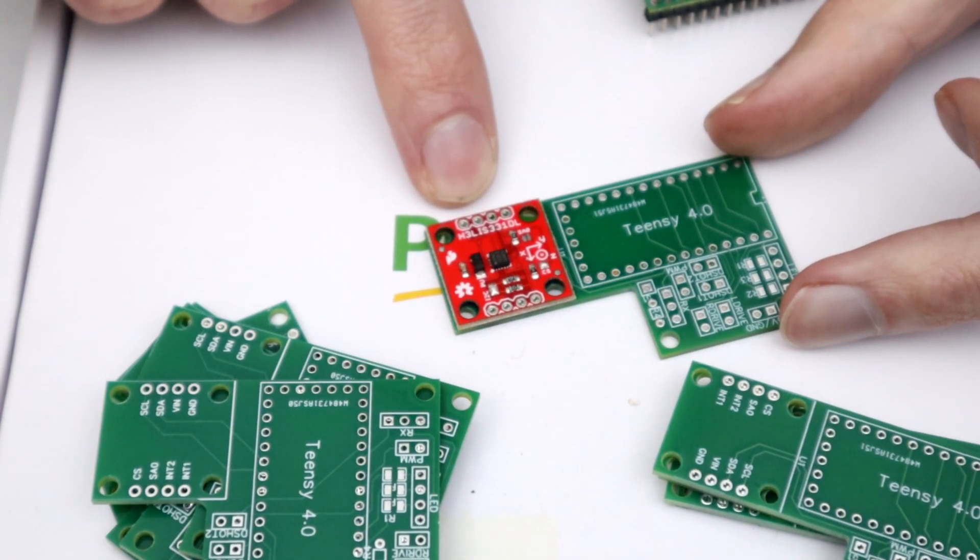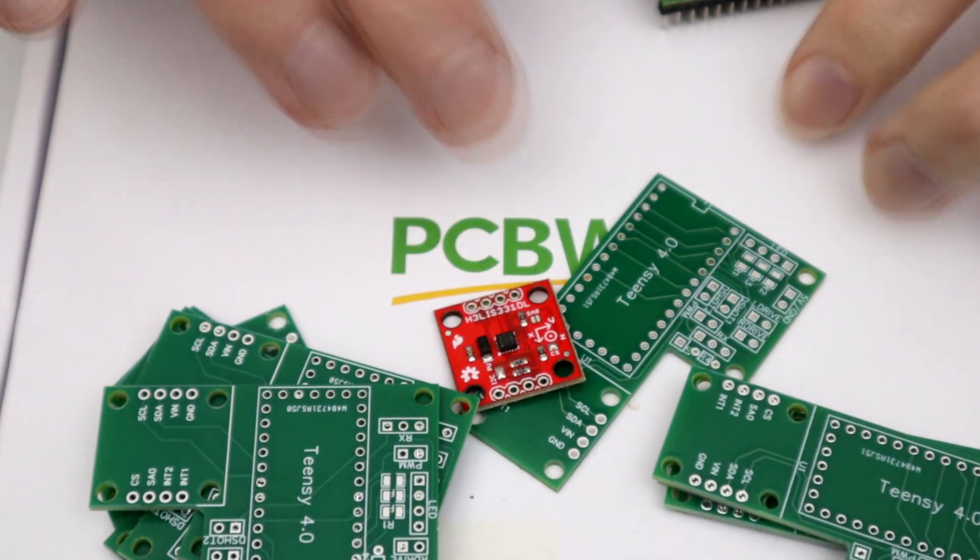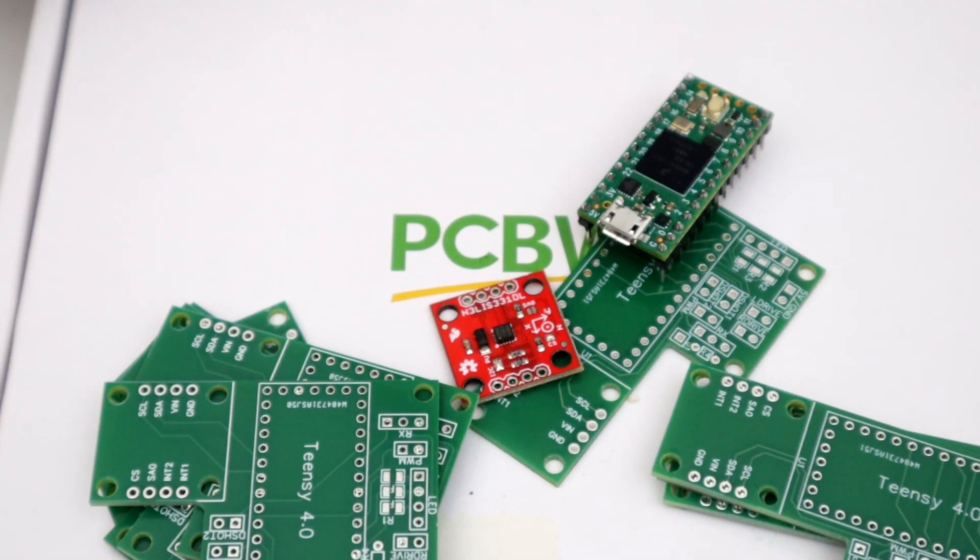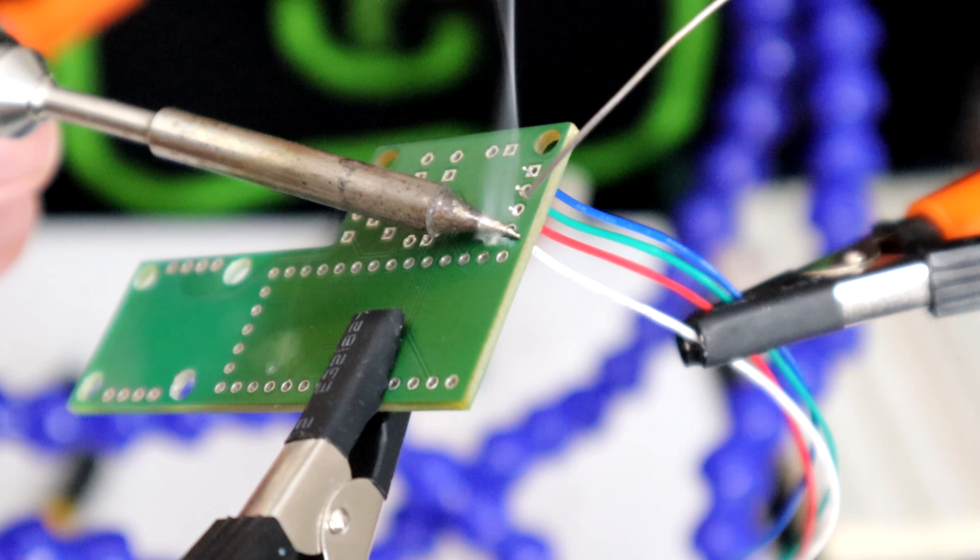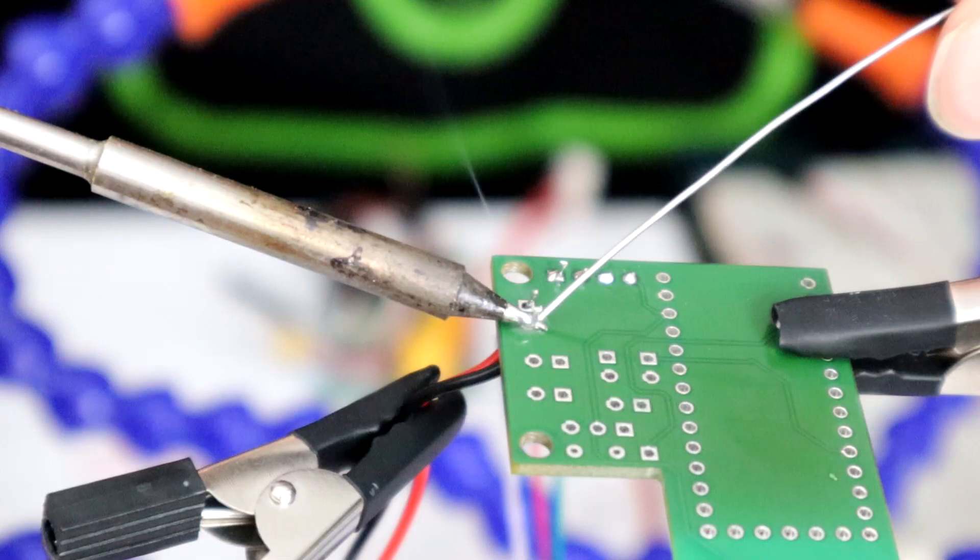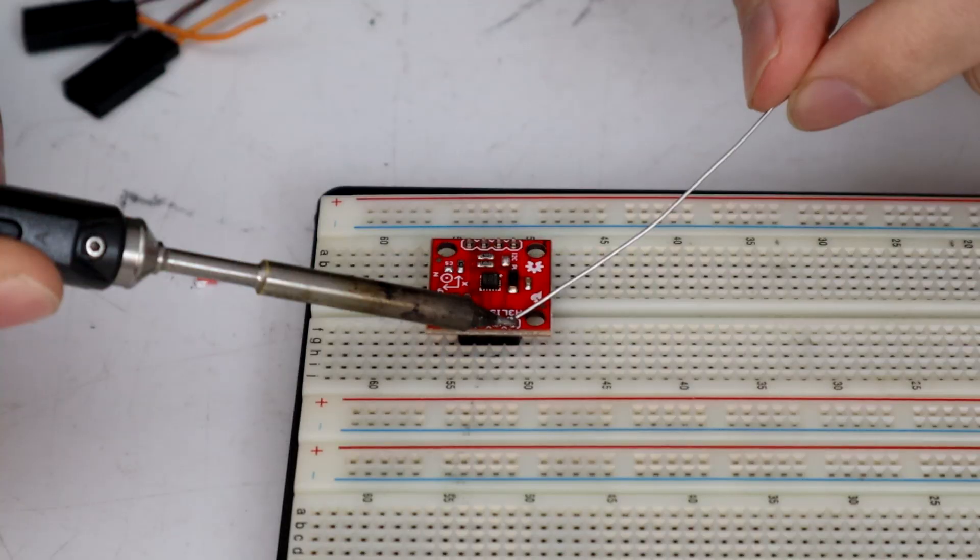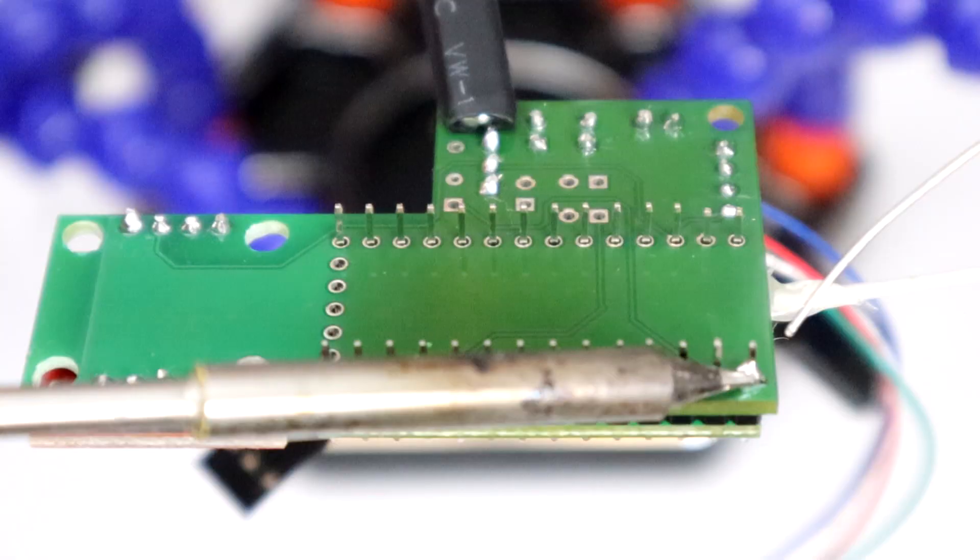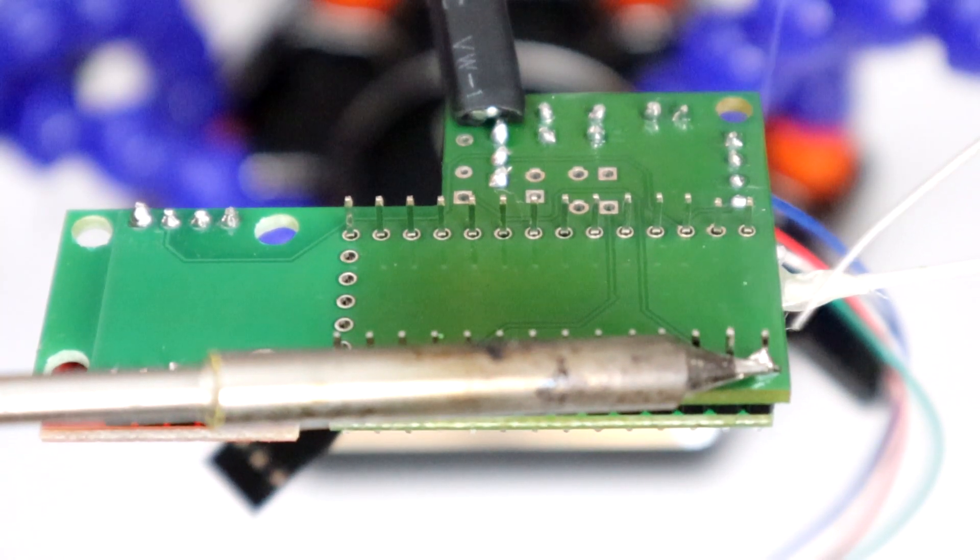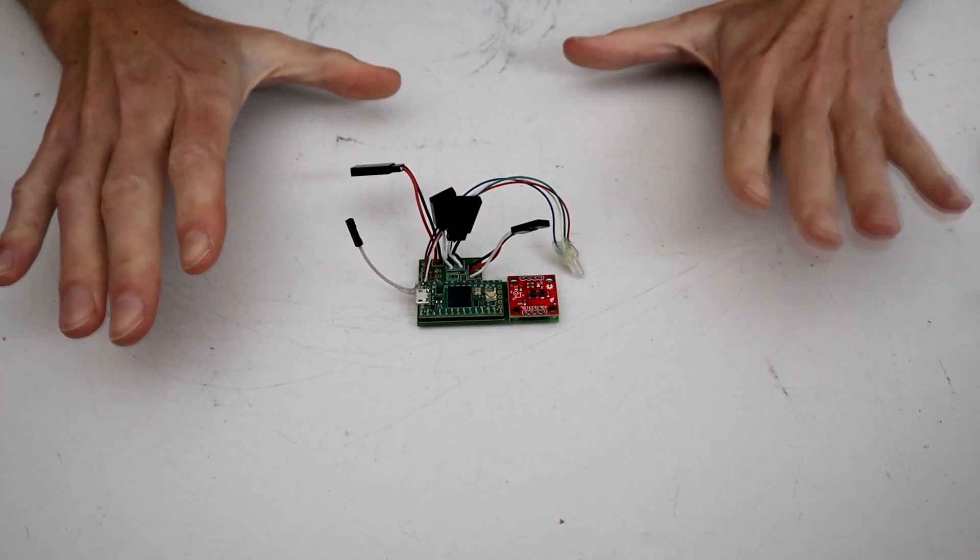To actually use this, we're going to need to solder it all together first. So we're going to melt on some resistors for the LED. Then we're going to solder in the LED, add a couple of connectors, and then, of course, the stars of the show, the accelerometer and the Teensy 4. And that is our electronics done.